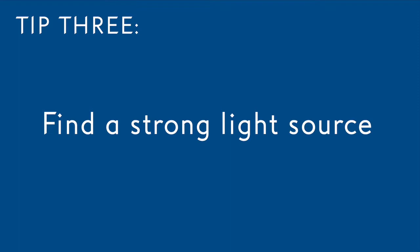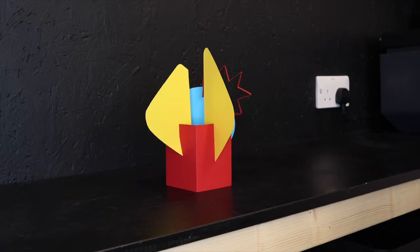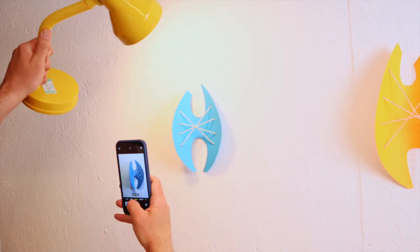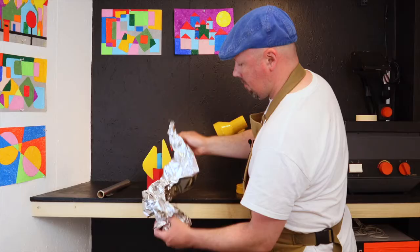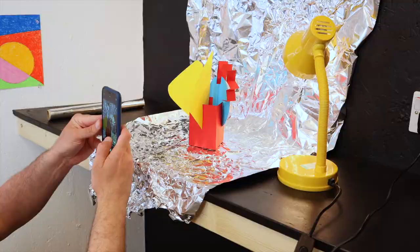Find a strong light source such as direct sunlight or a lamp to create dramatic highlights and shadows. Use some scrunched up tin foil to create a textured background.